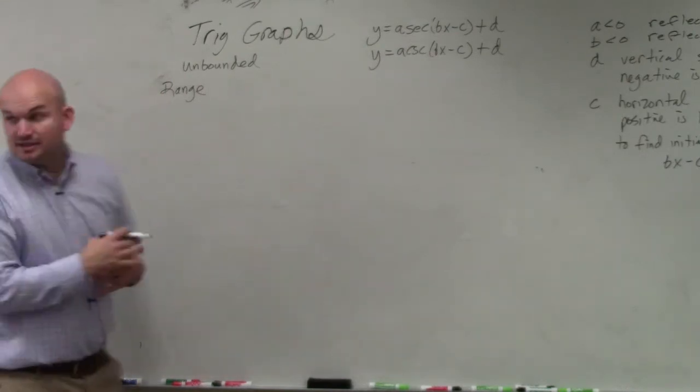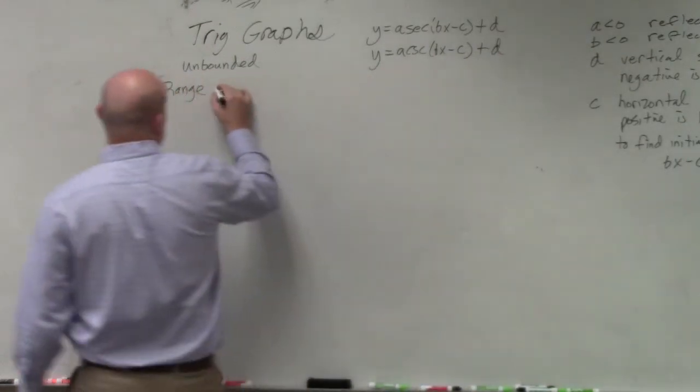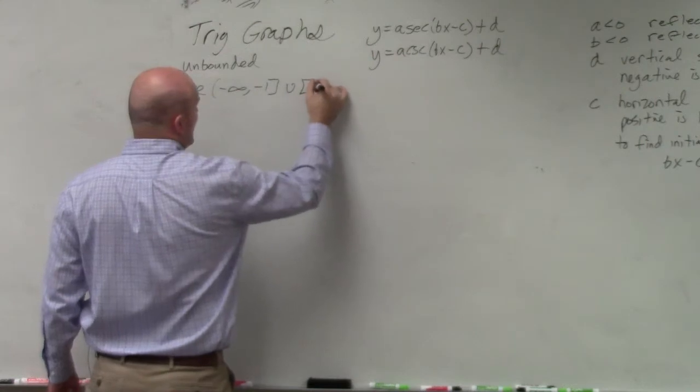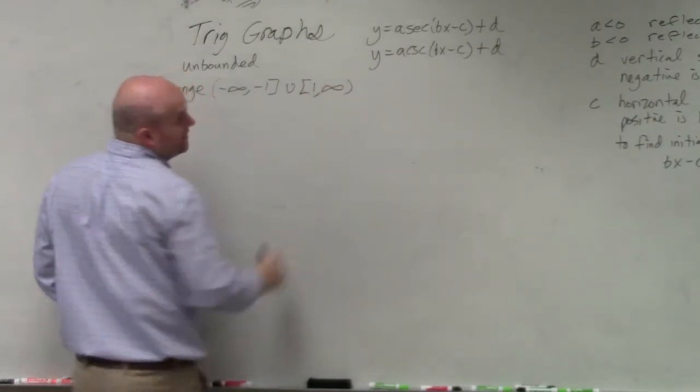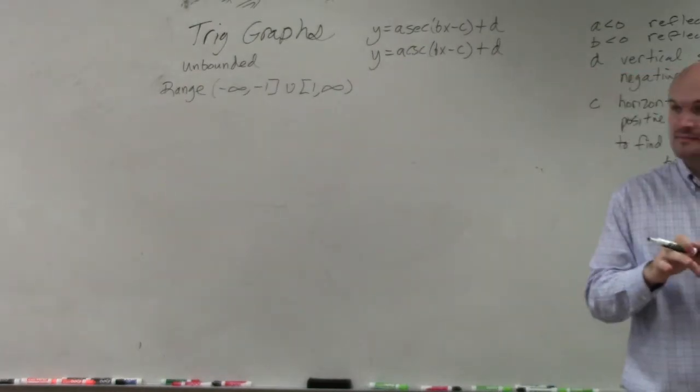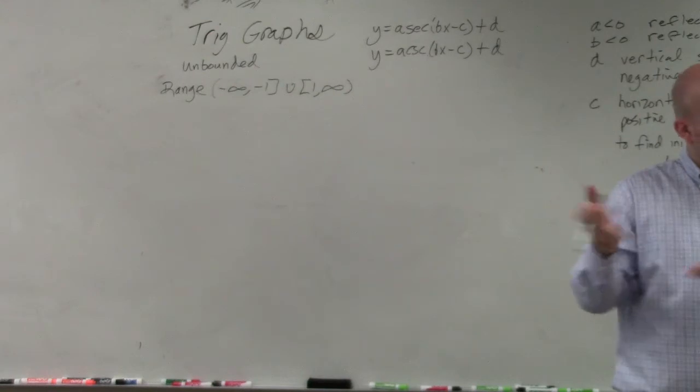So they basically go from negative infinity all the way up to negative 1, union, then they start again at 1 and then go to infinity. Because remember, the sine and cosine graphs are graphed in between negative 1 and 1, and these are the reciprocals.